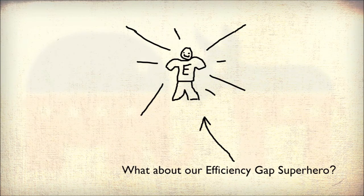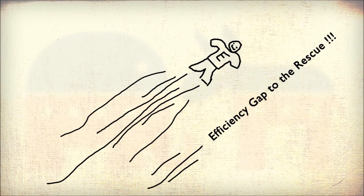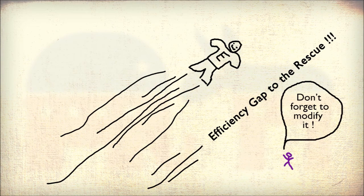So what does this mean? What will happen to the efficiency gap — does it have a future? It does. The efficiency gap may not be allowed in the courts, but it has brought the issue of gerrymandering to the public and will continue to do so. It can help determine how well your state performs, whether historically, in relation to other states, or from election to election. It will remain doing what it does: showing the disparity between seats and votes.